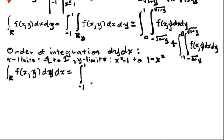Negative 1 to 1. Integral... and now I can just... I don't have to split up anything. I have x squared minus 1 to 1 minus x squared. And let's go ahead and plug in the function 2x plus y, dy dx.